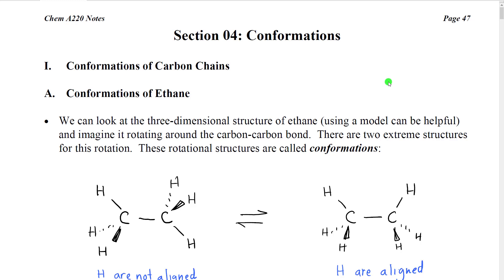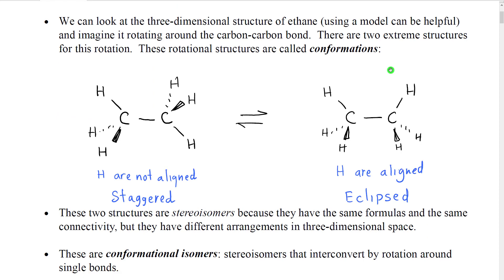We're going to start by looking at the conformations of ethane. If we look at the three-dimensional structure of ethane using a model, for example, and we imagine it rotating around the carbon-carbon bond, we can see that ethane forms basically an infinite number of shapes as the angle between the hydrogens on the two separate atoms changes.